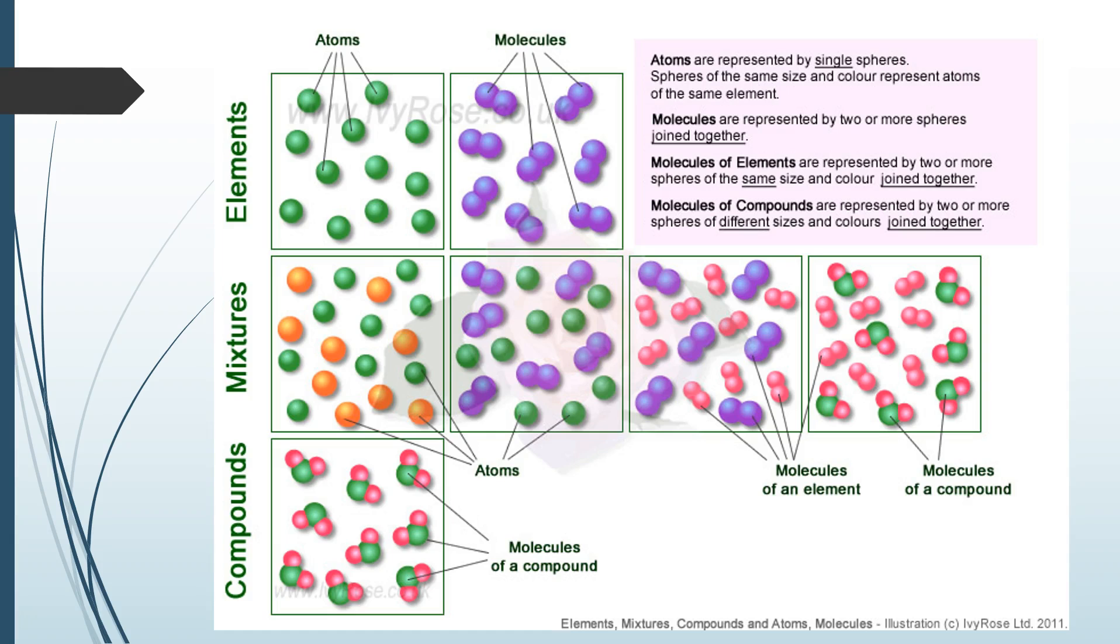This brings us back to looking at compounds, mixtures, and elements and how we define the difference. Elements are where all the atoms are made up of just one element, so all the atoms are the same. These can be single atoms such as helium, or molecules so N2 or O2 would fit this diagram here. Mixtures are where we have different substances and they're not chemically bonded together. You can see that the orange ones and the green ones here aren't chemically bonded together; they exist separately, so we could use different methods to actually separate them out.